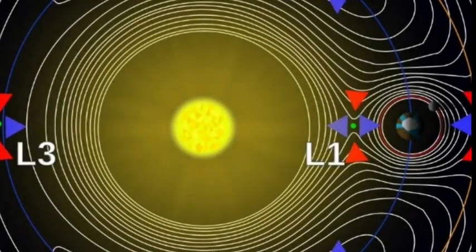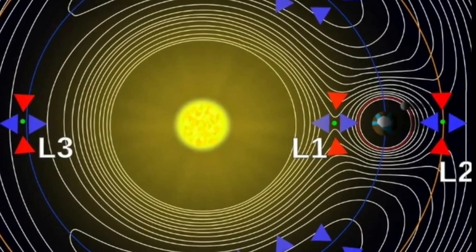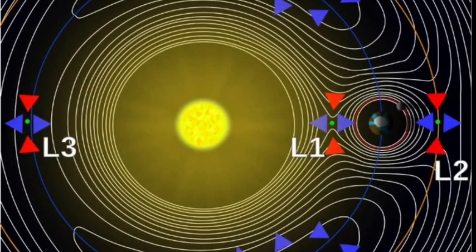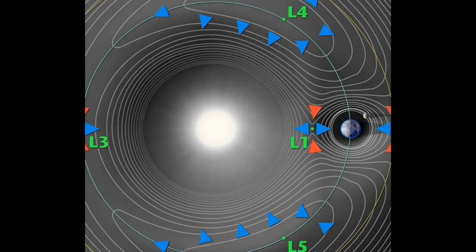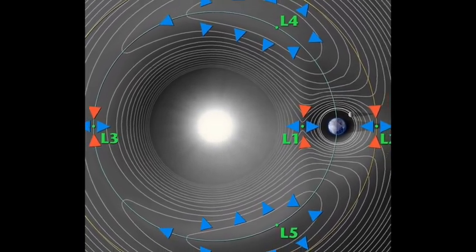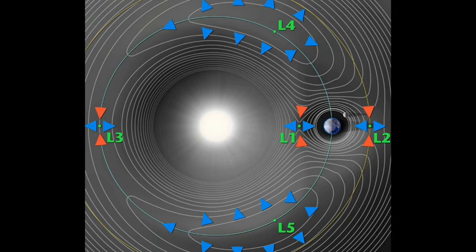These points are gravitationally stable, providing a potential location for a hypothetical planet like the counter-Earth to reside without being immediately disturbed by the gravitational influence of nearby planets. Objects placed in Lagrange points tend to stay there naturally or can be kept there with minimal energy because the forces are in balance.